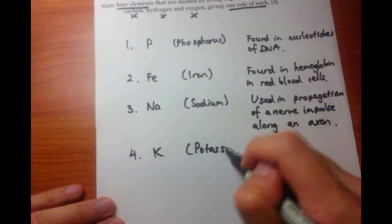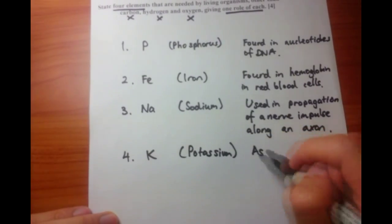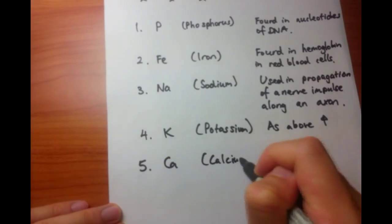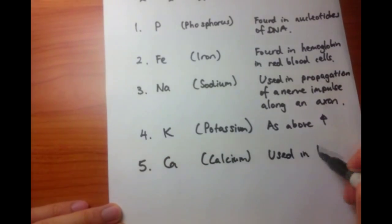And that's the same thing with potassium as well. There's sodium-potassium pumps within the axon, and these help to propagate that nerve impulse along.